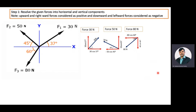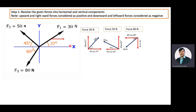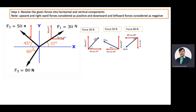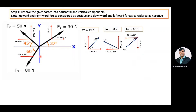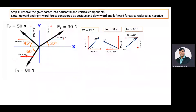After that, we will find the summation of horizontal components and the summation of vertical components. For horizontal: 30 cos 37 degrees, minus 50 cos 45 degrees (leftward direction), and minus 80 cos 60 degrees (leftward direction). For vertical: 30 sin 37 degrees, plus 50 sin 45 degrees, and minus 80 sin 60 degrees (vertically downward direction, so it is negative).